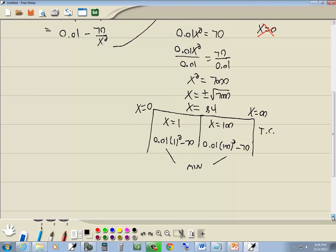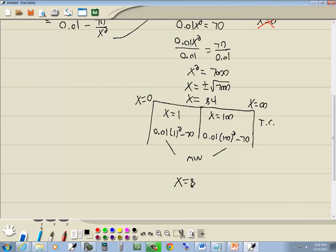And all they're wanting is the number of units, so we've got x equals 84. Now I'm not really worried about if I got this correct over here or not, because I know if I changed this instead of 1,000 to 1,000,000, well, 1,000,000 squared times 0.01 minus 70 is positive. And all we really care about is the sign, so we don't have to get real precise on the value. x equals 84 is our answer.